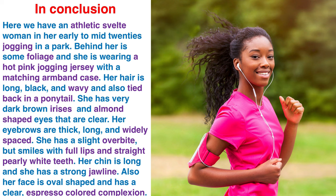That's about it. In conclusion, here is a paragraph that we could write: Here we have an athletic, svelte woman in her early to mid twenties jogging in a park. Behind her is some foliage and she is wearing a hot pink jogging jersey with a matching armband case. Her hair is long, black and wavy and also tied back in a ponytail. She has very dark brown irises and almond shaped eyes that are clear. Her eyebrows are thick, long and widely spaced. She has a slight overbite, but smiles with full lips and straight pearly white teeth. Her chin is long and she has a strong jawline. Also, her face is oval shaped and has a clear espresso colored complexion.